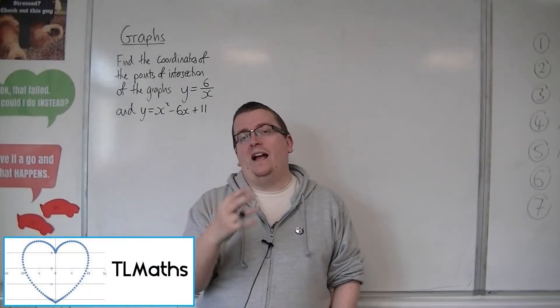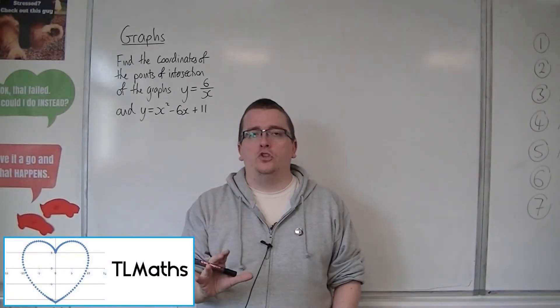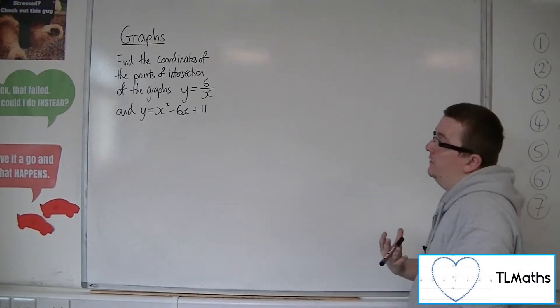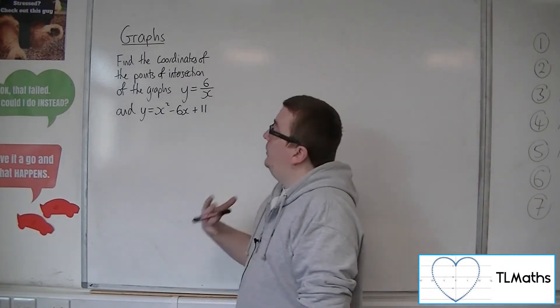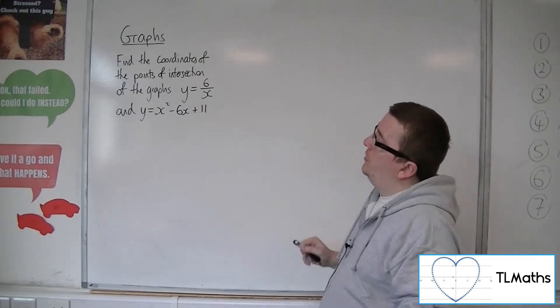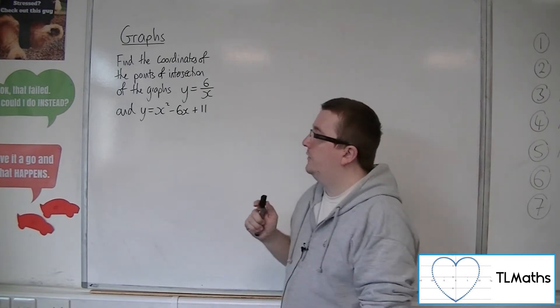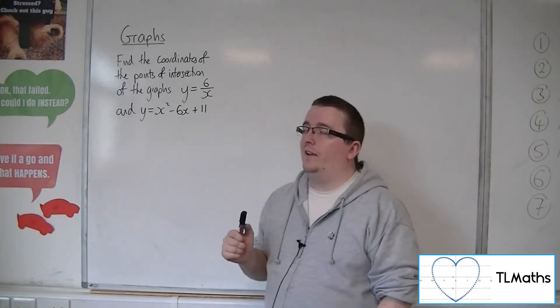So in this section we're going to be looking at how we find the intersection of graphs and what that actually means. Let's say I've been tasked with finding the coordinates of the points of intersection of the graphs of y equals 6 over x and y equals x squared minus 6x plus 11.